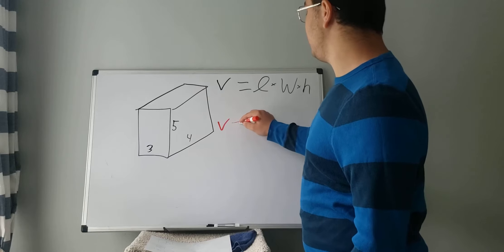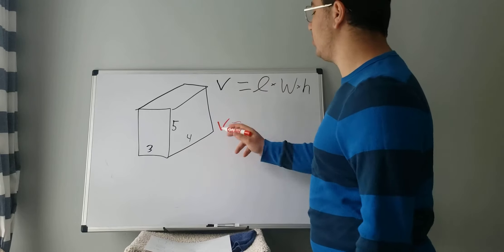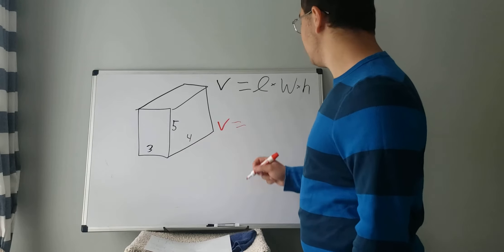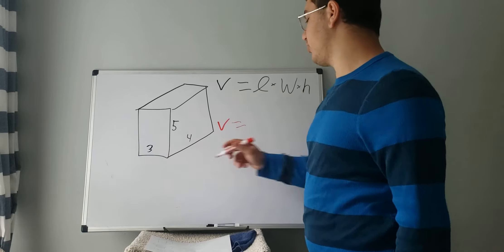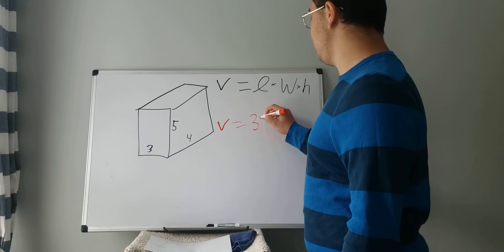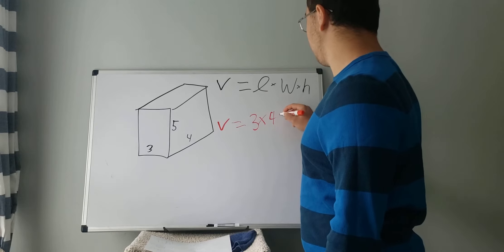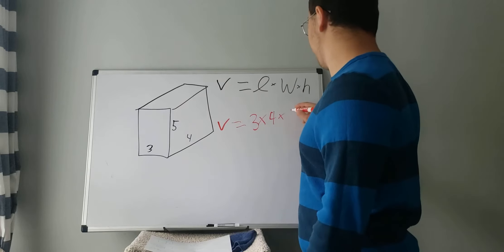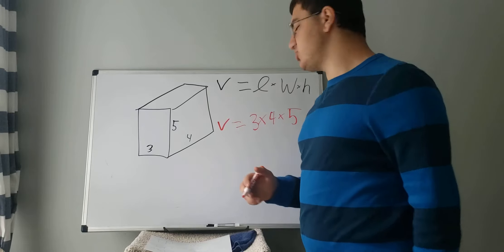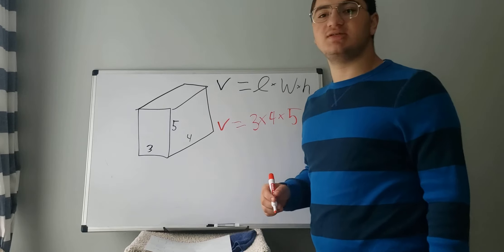So we drop down the V equals our length is how long it is. So this is our four, right? So, or excuse me, our three. So three multiplied by the width, which is four, multiplied by the height, which is five. And you just multiply straight across. No need for parentheses since this is multiplication.